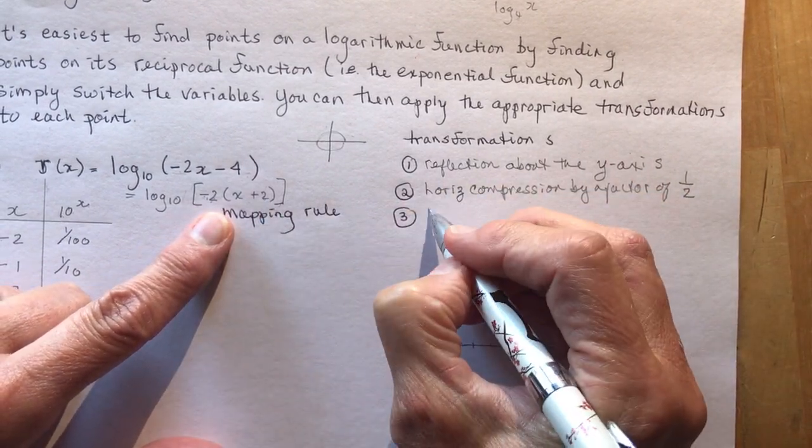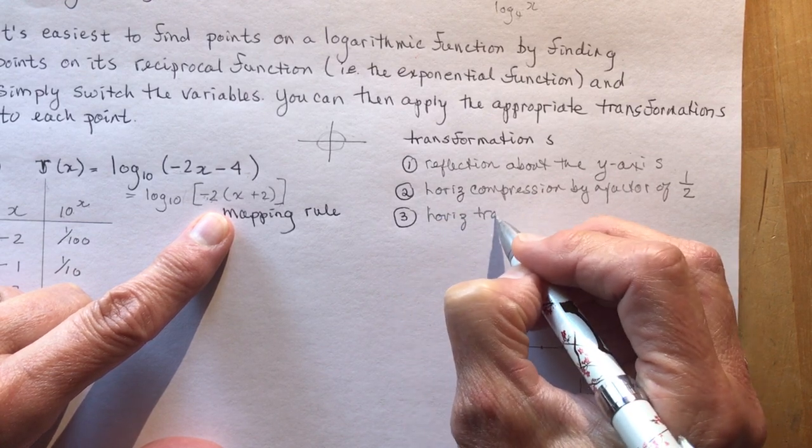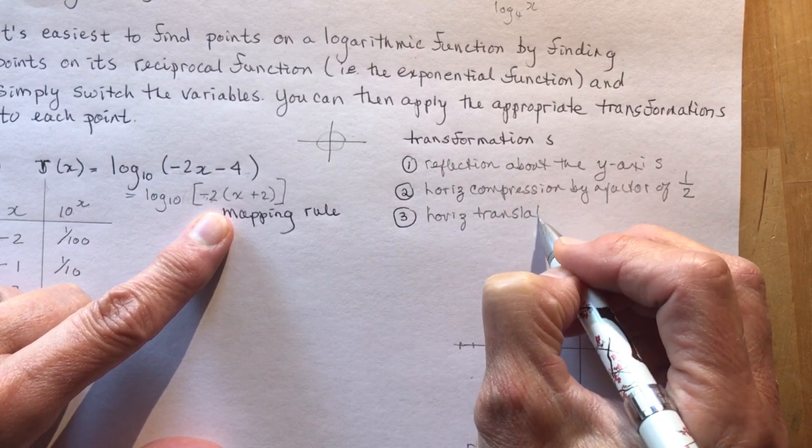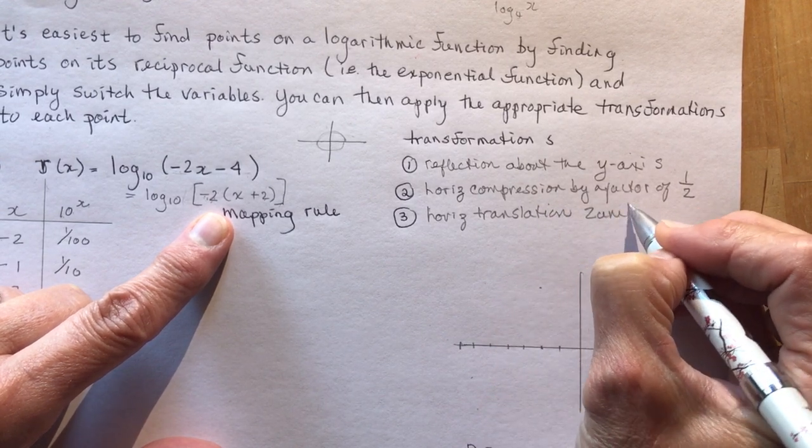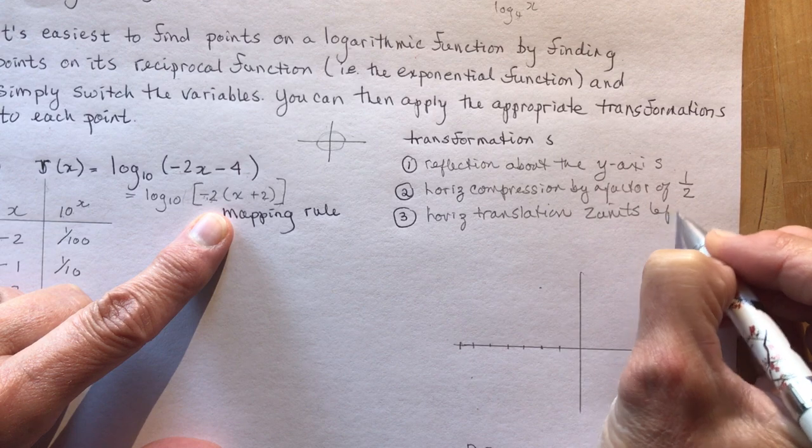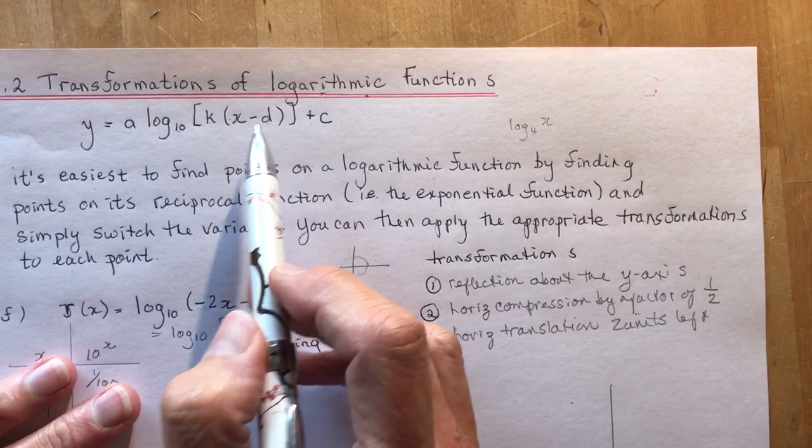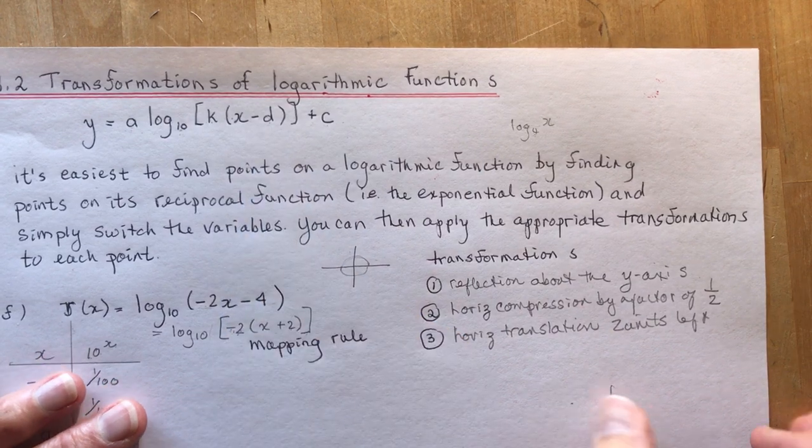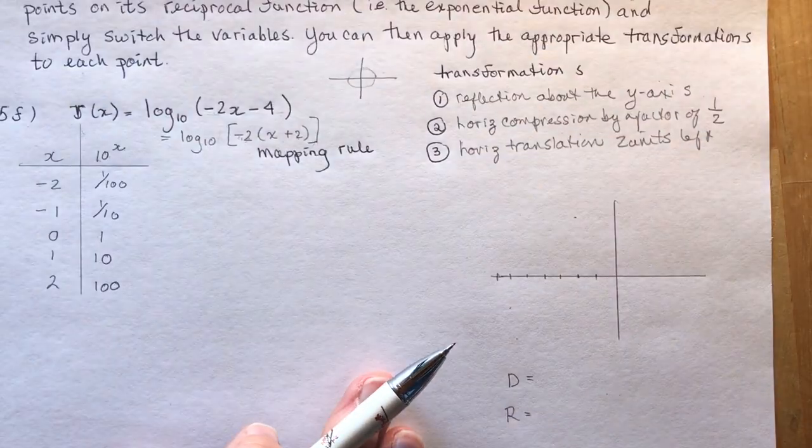And this plus 2 means horizontal shift or translation. It likes you to say horizontal translation, 2 units left. So it says plus 2, it's minus 2, because it's actually a minus D. So I've got all the transformations, and now I need to find some points.